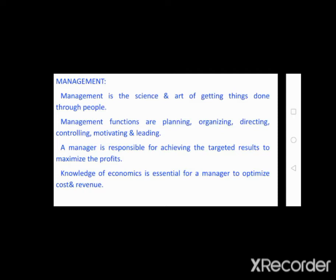The main functions of a manager in the organization are, first of all, planning. Planning means to plan before going to action — how to implement the activities — and is also called as the rough structure of an organization. The next function is organizing, which means making links between different activities to systematically run the overall organization with the help of planning.